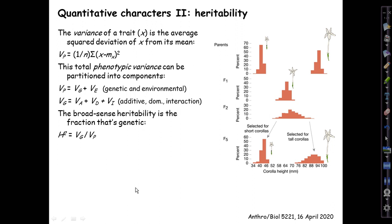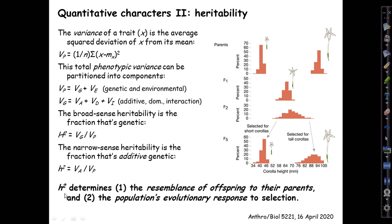It's not heritability squared, it's just the heritability. Someone put the superscript 2 in there long ago to remind us that we're talking about variances. The narrow-sense heritability is the more important one for most purposes. It's the fraction that is additive genetic, so just V_A over V_P, excluding the dominance and interaction contributions.